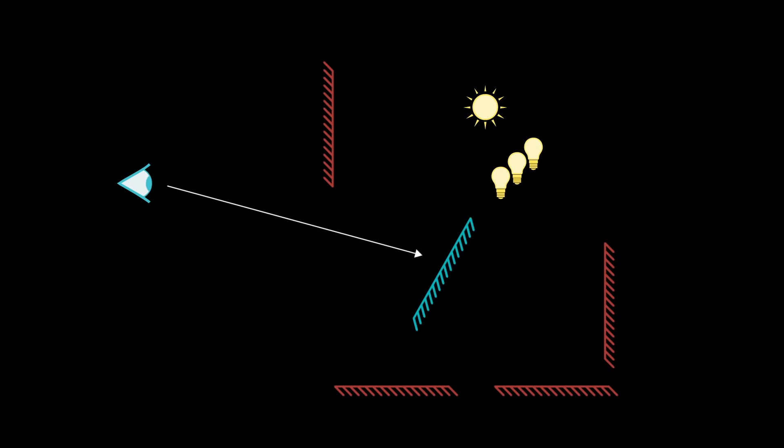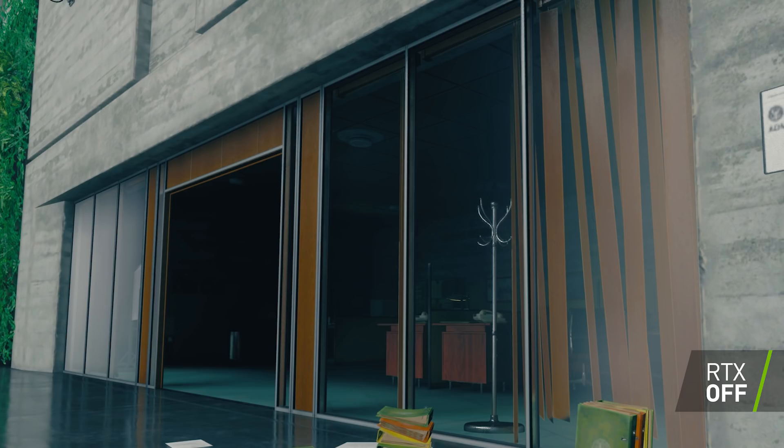We also support transparent reflections. To compute that, we again go to our diagram — we shoot a primary ray to find the transparent surface. We compute the normal from that transparent surface as we're doing simple mirror reflections. The result is that you can see both through it — transparency — as well as see the reflection from the reflected ray.